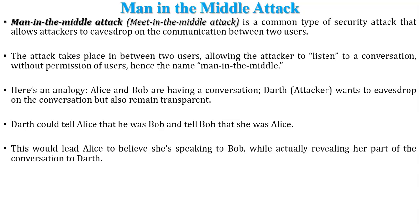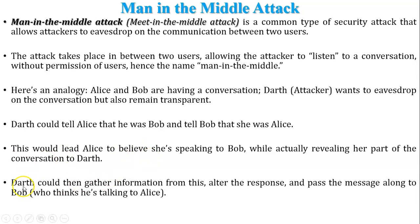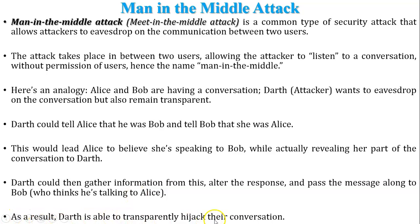Alice and Bob have no idea there is an attacker intercepting their communication. Darth gathers information from the conversation, alters responses, and passes messages along to Bob, who thinks he is talking to Alice. As a result, Darth is able to transparently hijack their conversation. This is one scenario of the man-in-the-middle attack.